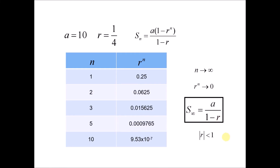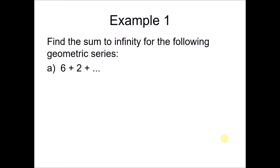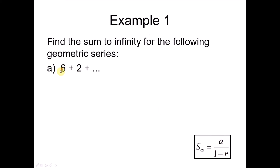Example 1: Find the sum to infinity for the geometric series 6 + 2 + ... adding up to infinity. There is only one formula for sum to infinity. We must first find a and r. Here a = 6, and r = 2/6 = 1/3. Substituting into the formula: S∞ = 6 / (1 - 1/3). Calculating this gives the answer 9.